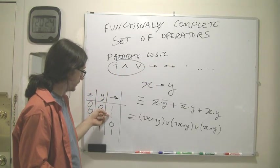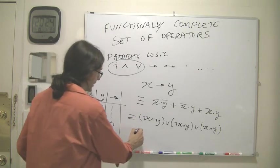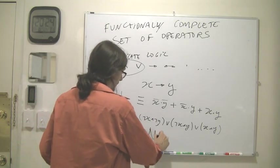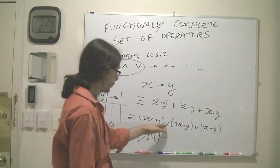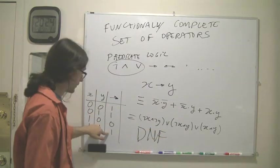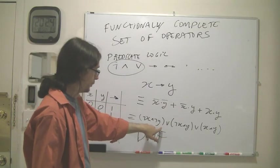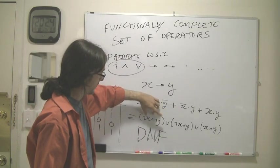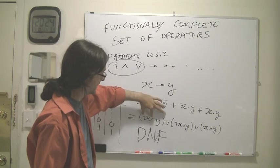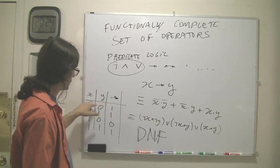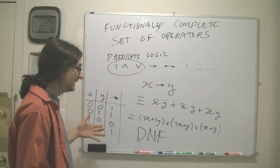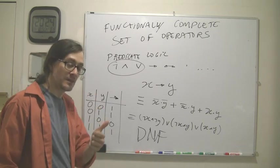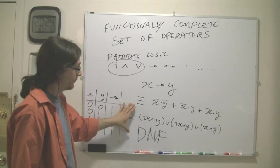From the truth table, we can generate a representation in disjunctive normal form, which is going to be like this, an or of all the lines that are ones. Each row is going to be represented by a product or an and of literals, of variables or negations. So we only really need and, or, and not to write any function.